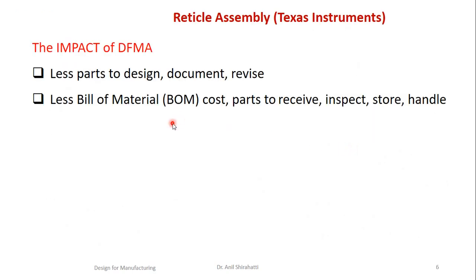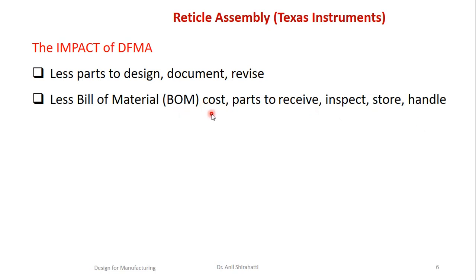Because of the impact of DFA, there are less parts to be designed, documented, and revised. Designing cost is reduced, documentation for maintaining so many parts is reduced, and any revision needed applies to fewer parts. Bill of material cost is less. Parts to receive, inspect, store, and handle have reduced heavily. From 40 to 45 parts, it has reduced to 10, so much less inventory to maintain.